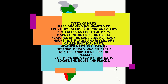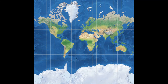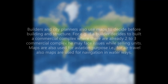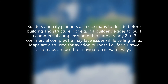We have noticed that there are lines drawn across a map in the form of a grid. The lines of latitude and longitude, scale, symbols, direction, etc. are drawn on the map. A scale is seen at the base of every map, which represents the distance.